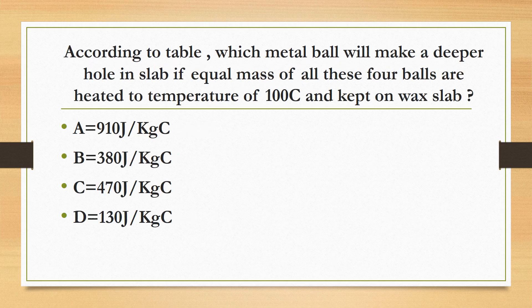According to the table, which metal ball will make a deeper hole in a wax slab if equal masses of all 4 balls are heated to 100°C? A = 910 J/kg°C, B = 380 J/kg°C, C = 470 J/kg°C, D = 130 J/kg°C. The correct answer is D, 130 J/kg°C.